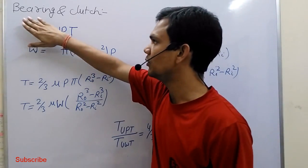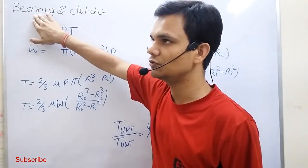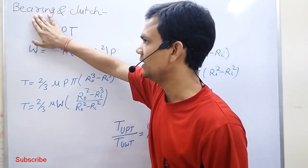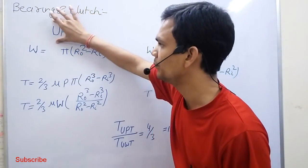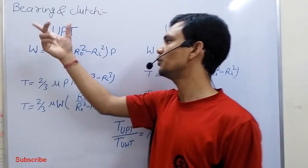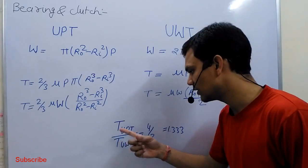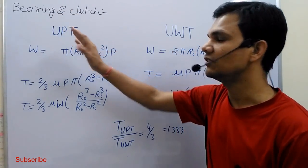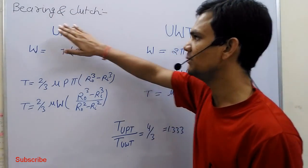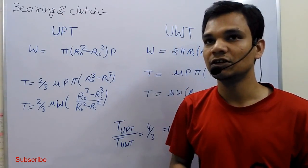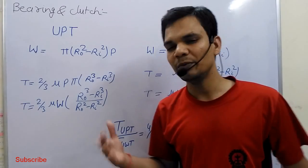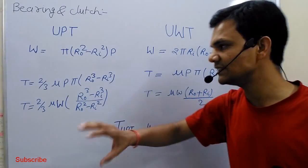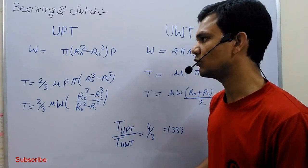Now, because the main function of the bearing is to resist the load, in the case of bearing we generally prefer uniform pressure theory. In uniform pressure theory, the frictional torque is 4/3 times that of uniform wear theory. We design both bearing and clutch for the worst condition, so that in normal condition they can obviously work.